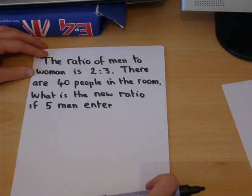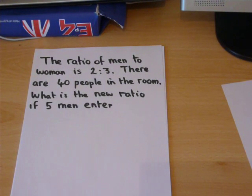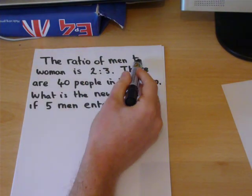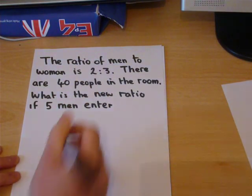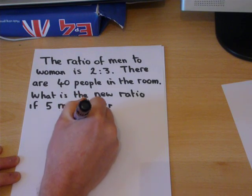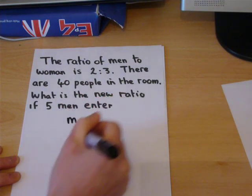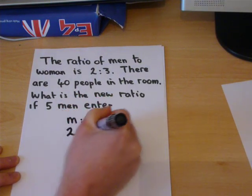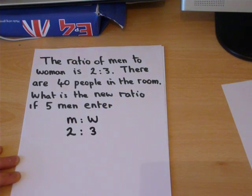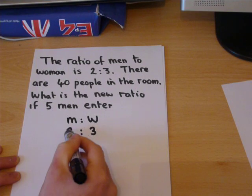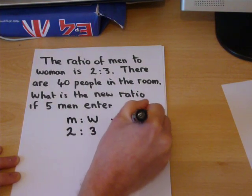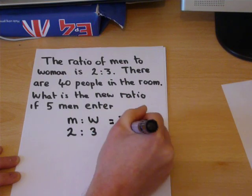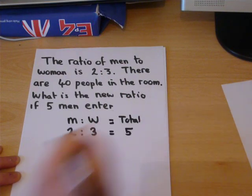The final question. The ratio of men to women is 2 to 3. So men to women is 2 to 3. Per group, if there's 2 men and 3 women, there is a total of 5 in each group.